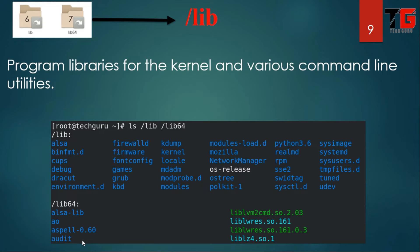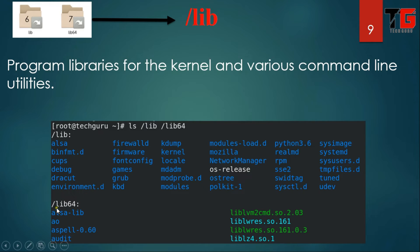Next is slash lib, which contains program libraries of the kernel and various command line utilities like firewalld, kernel, rpm, tuned, systemd, and python. If your operating system is 64-bit, then slash lib64 is also available and contains the libraries for 64-bit.